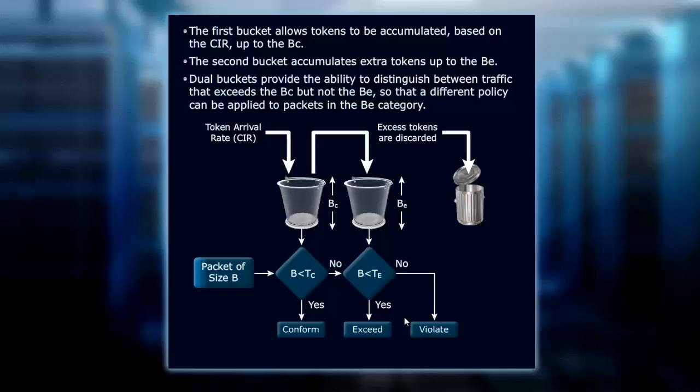Everything in bucket A, or the first bucket, conforms. If it doesn't, we look at the second token bucket for room. And if that doesn't work and we exceed it, typically on an exceed or a violate action, we discard. That's the way our dual buckets conform and work in our policing.